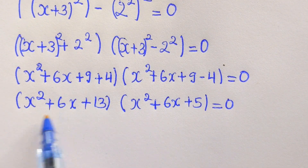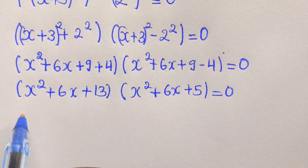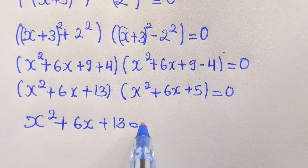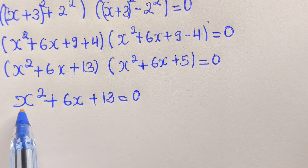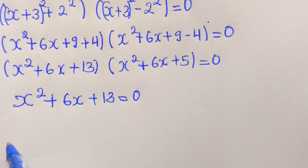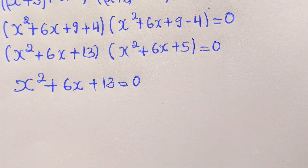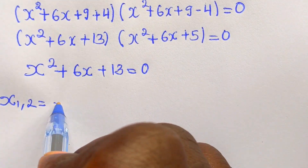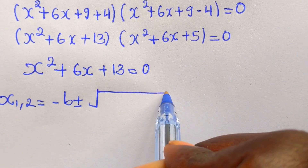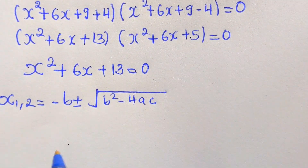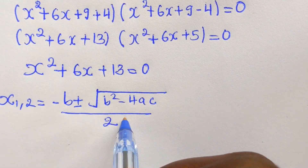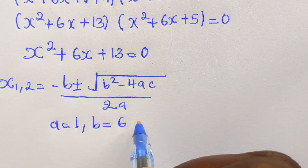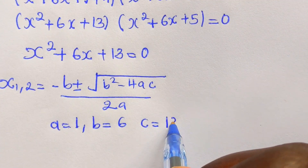We equalize each quadratic to zero. For the first one, x² + 6x + 13 = 0, we use the quadratic formula: x₁ and x₂ = (-b ± √(b² - 4ac)) / 2a. Here a = 1, b = 6, and c = 13.